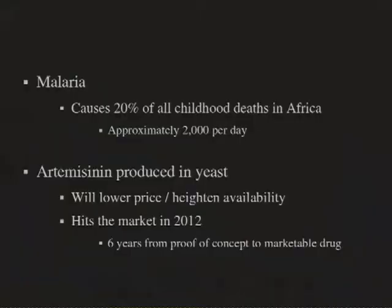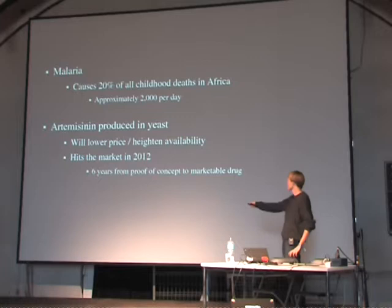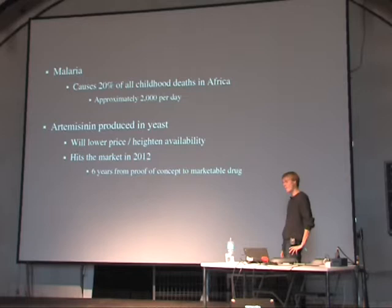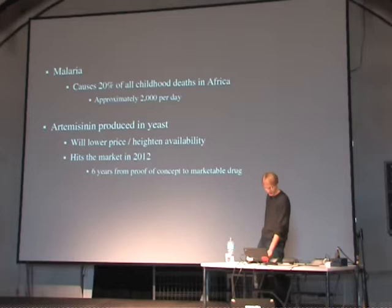Malaria is a huge problem — it causes 20 percent of childhood deaths in Africa, about 2,000 deaths per day. These researchers produced artemisinin in yeast, which is lowering the price and also solving problems like availability from low crop yields or market fluctuations. This drug proof-of-concept of producing it in yeast was created in 2006 and was set to hit the market in 2012. So it still takes a while to do these things, but they are possible.